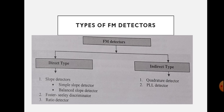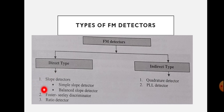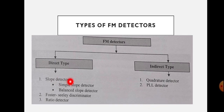Now let us see the different types of FM detectors. FM detectors are mainly classified into direct type and indirect type. The direct type includes slope detectors, Foster-Seeley discriminator, and ratio detector. The indirect type includes quadrature detector and PLL detector. Here we are interested in the slope detector and the PLL detector.